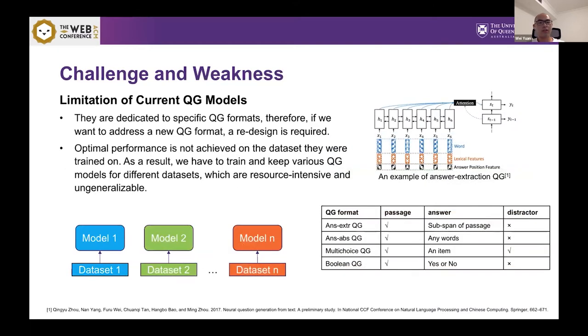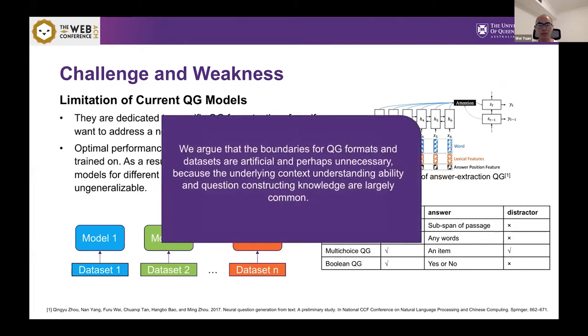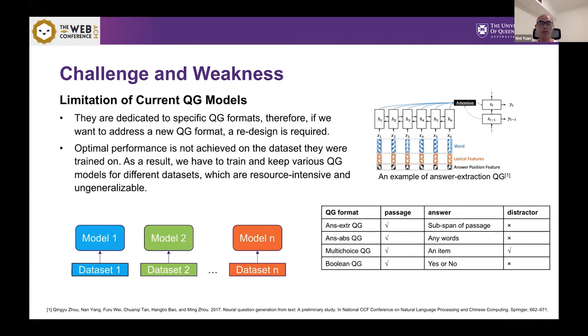However current QG models have many limitations. First is that they are dedicated to specific QG formats. That is to say that if the QG model is designed for answer extraction QG, it cannot handle answer abstraction QG problem because for answer extraction QG, the answer is a subspan of passage. So maybe we just need one encoder and we just give the encoder some specific tokens to indicate which part is the answers. However, for answer abstraction QG, the answer is not a subspan of passage. It can be any words. So we need at least two encoders, right? So we cannot use the answer extraction QG to handle answer abstraction QG.